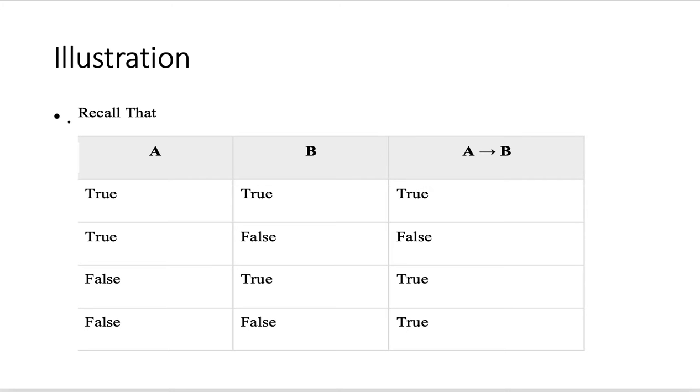We can see that with the truth table here. We have A implies B over here with our truth table, and we have true, false, true, and true. But the false only occurs when A is true and B is false.